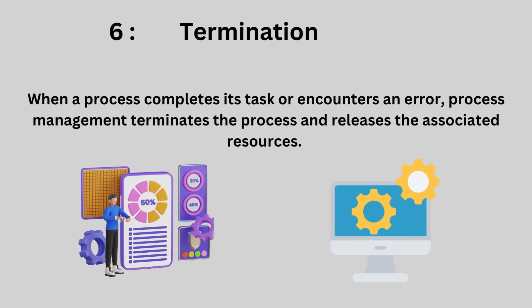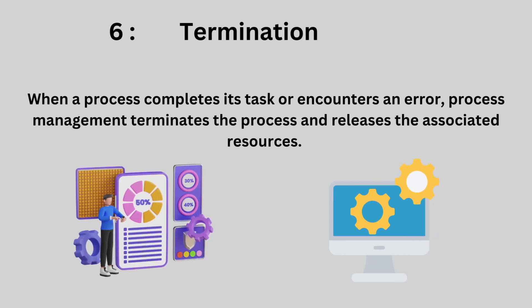Six: termination. When a process completes its task or encounters an error, process management terminates the process and releases the associated resources. It ensures that terminated processes are properly cleaned up to prevent resource leaks and system instability.